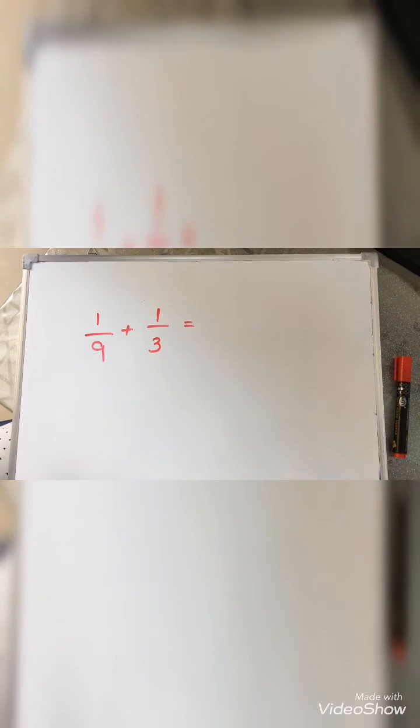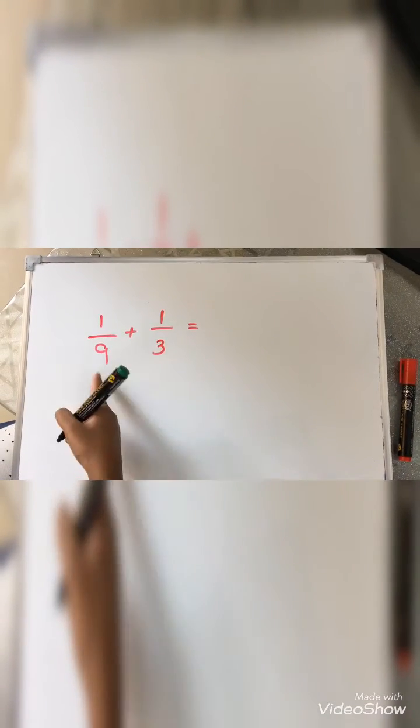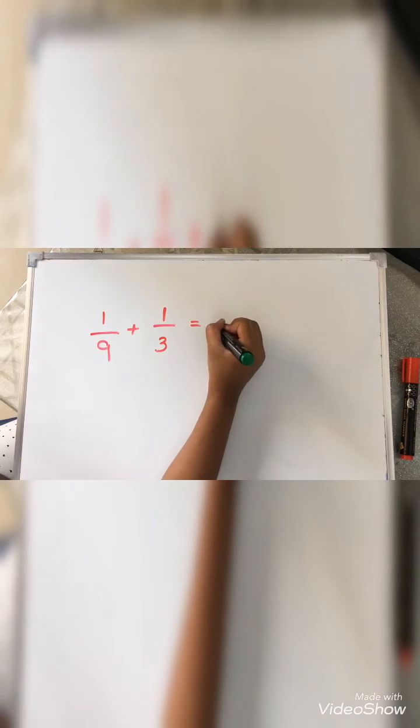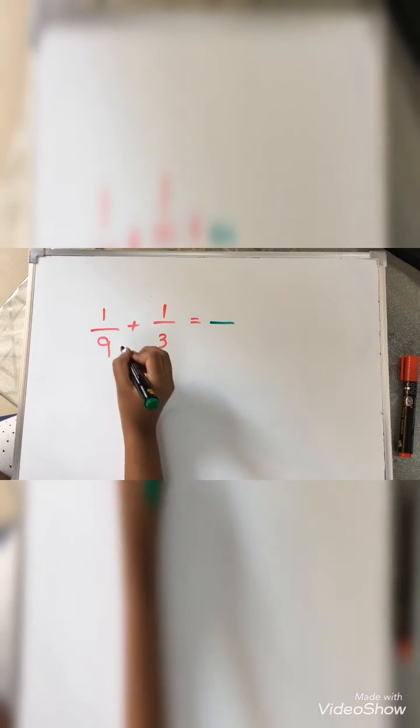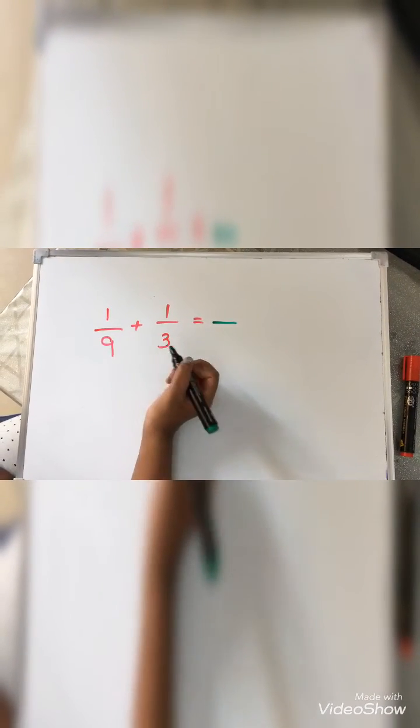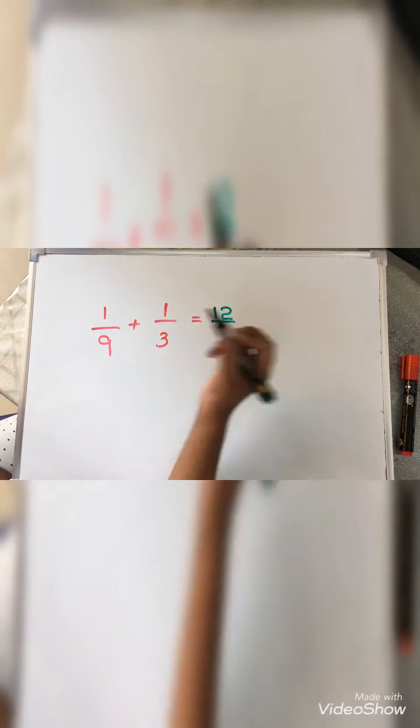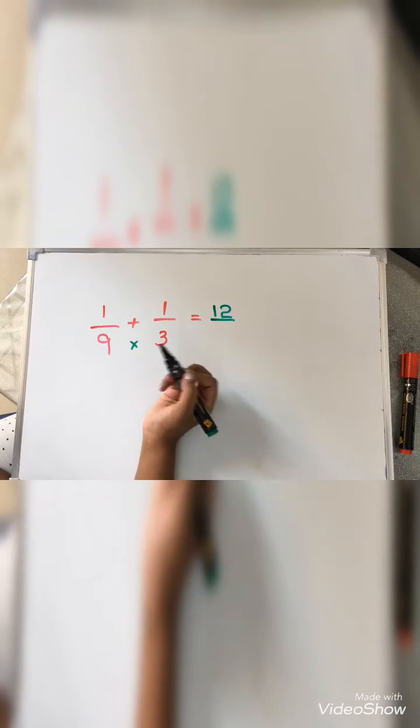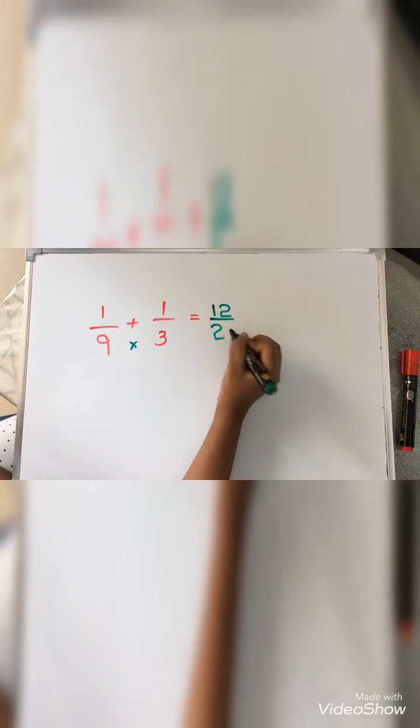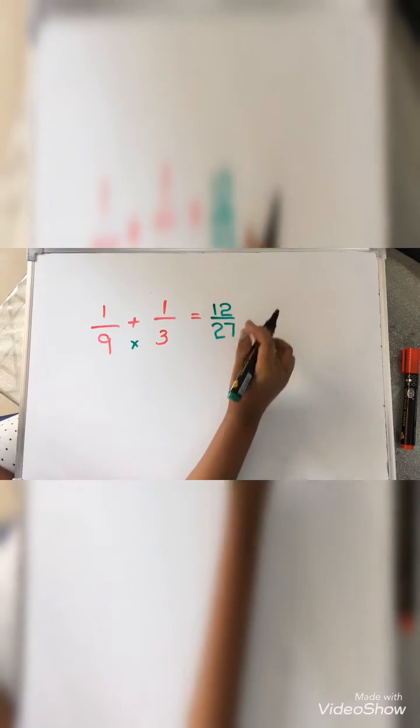For finding the numerator, I am going to add both these numbers. So 9 plus 3 equals 12. And for the denominator, 9 times 3 equals 27. The answer is 12 by 27.